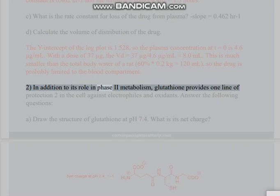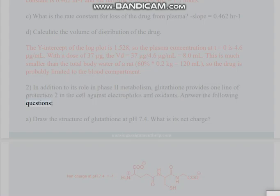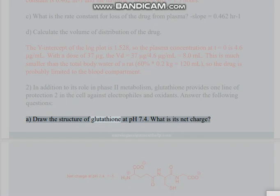Problem 2: In addition to its role in phase 2 metabolism, glutathione provides one line of protection in the cell against electrophiles and oxidants. Answer the following questions. Part A: Draw the structure of glutathione at pH 7.4. What is its net charge?